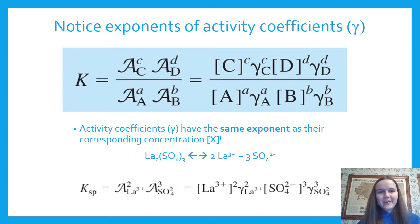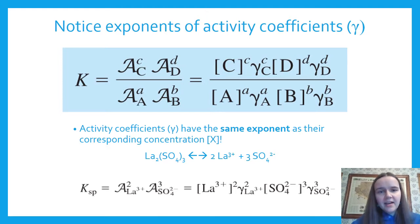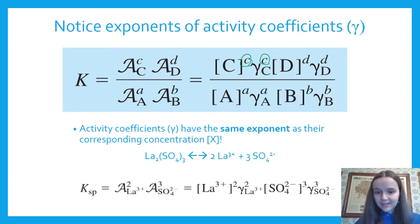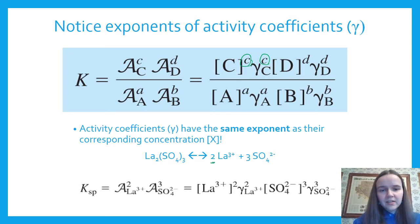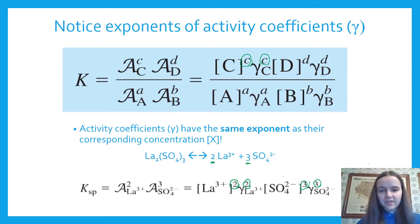Notice that the exponents on the activity coefficients are the same as the exponents on the concentration. In the general form, there's a power of c for both the concentration of C and its activity coefficient. For a real example, lanthanum sulfate makes two lanthanums and three sulfates: the lanthanum concentration is squared and so is its activity coefficient; the sulfate is cubed and so is the sulfate activity coefficient.